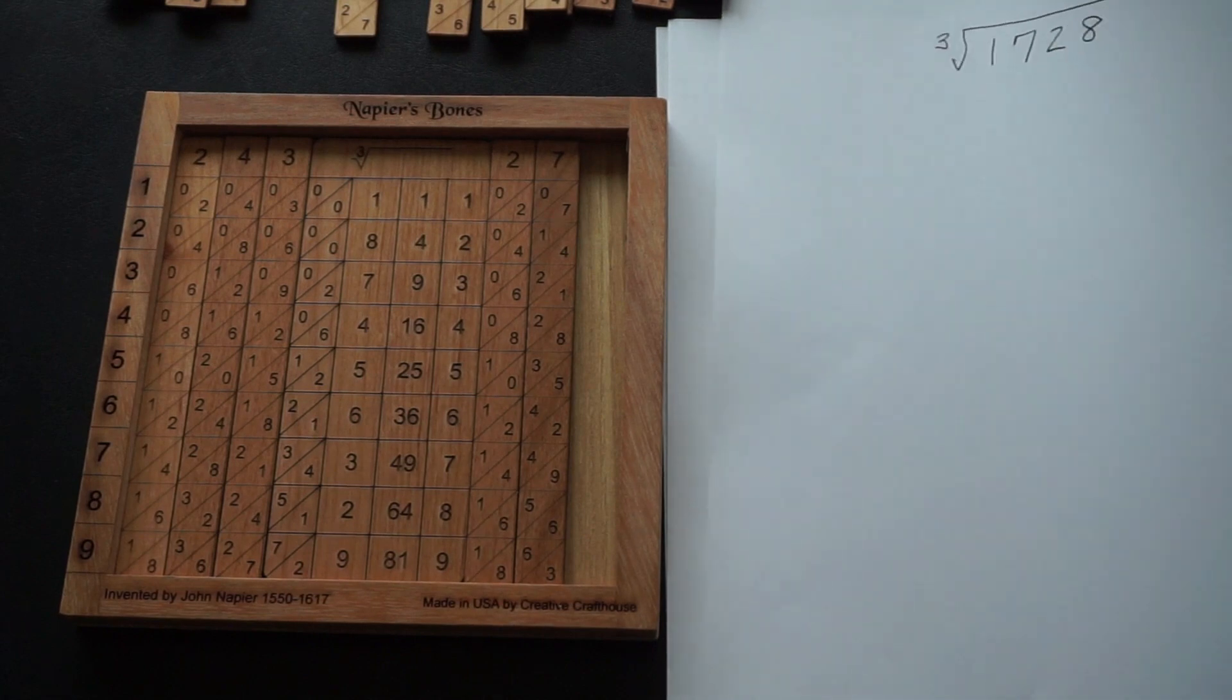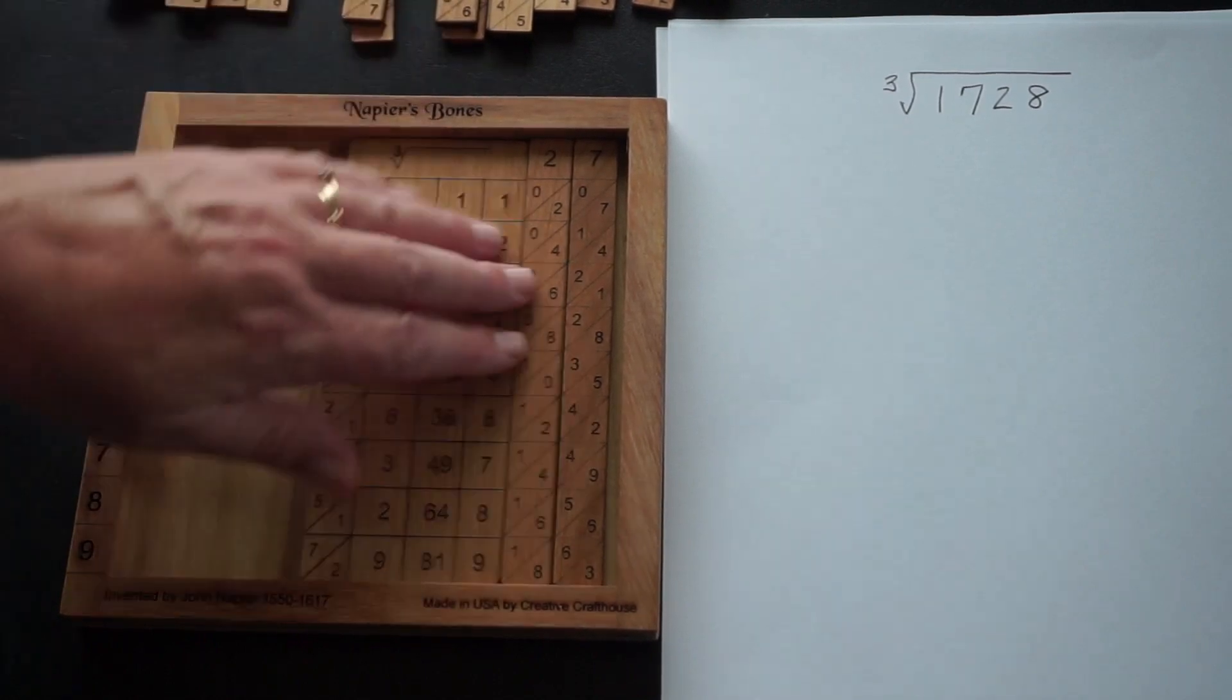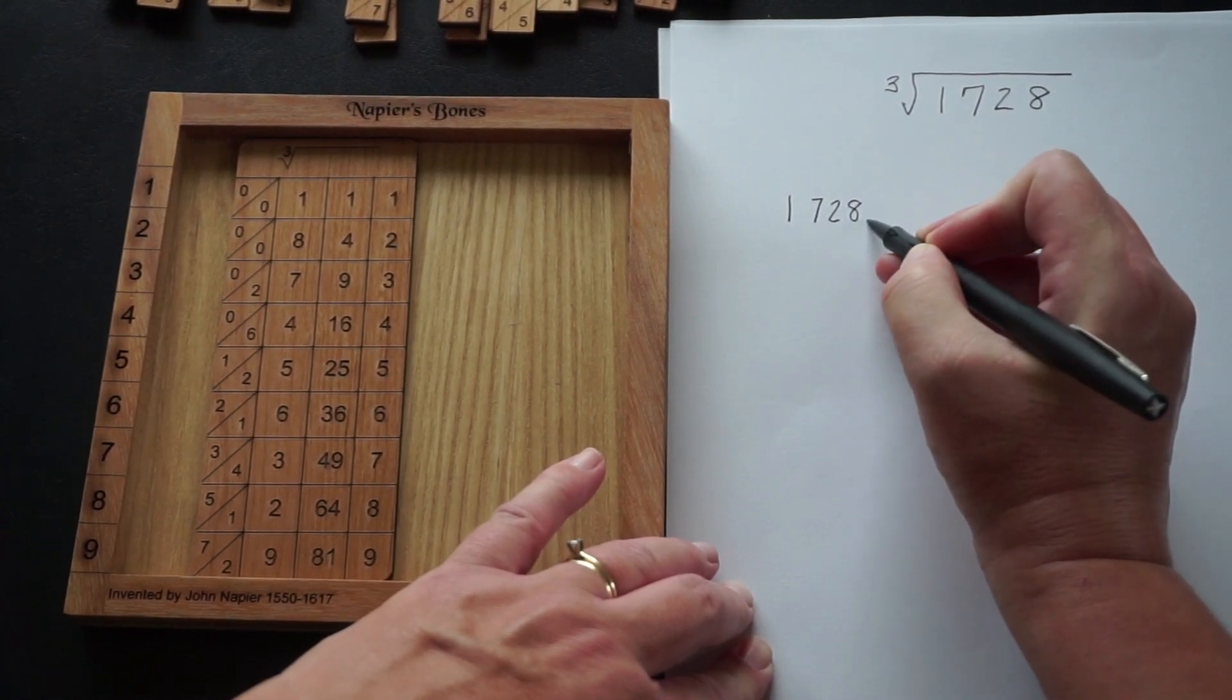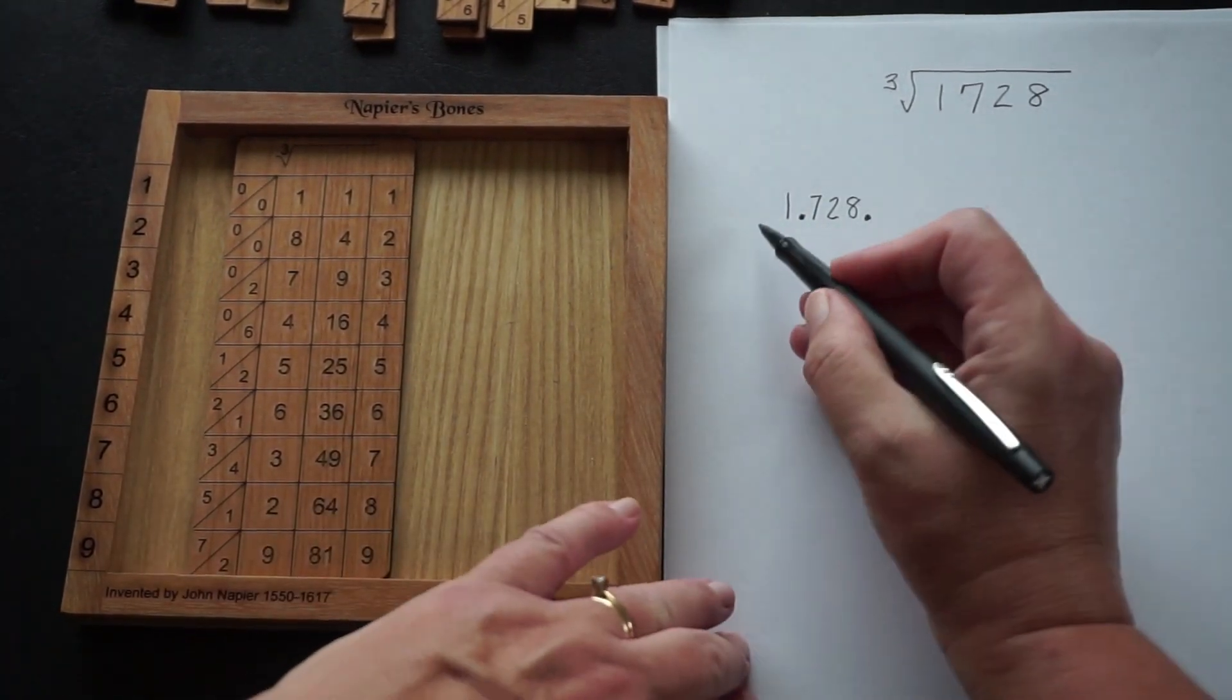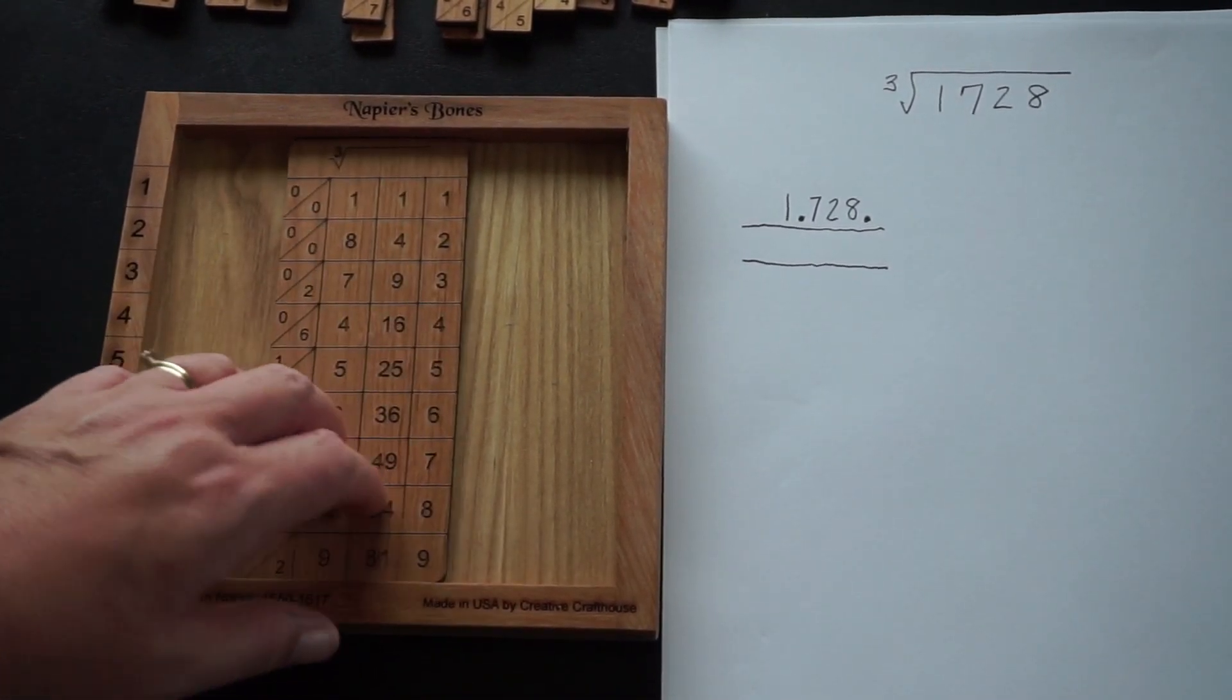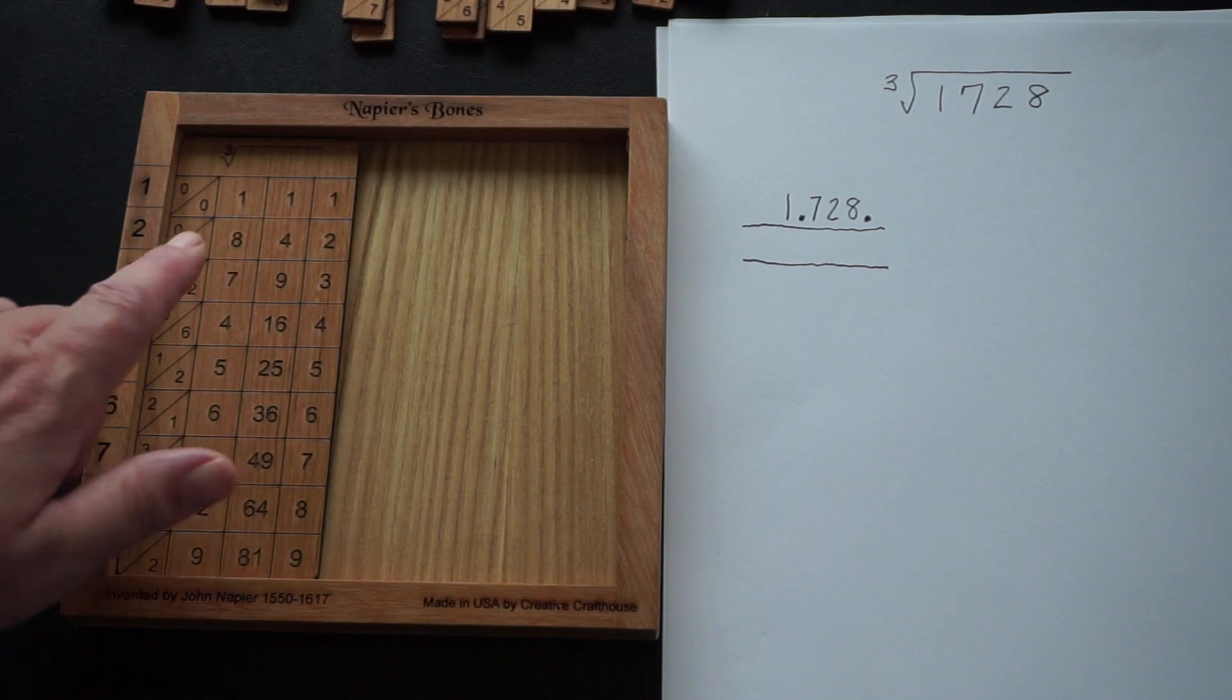Our next example is somewhat smaller. It's 1728, so I'll just reset my board. I have my strips just above my workspace so I can easily grab them. I'm going to rewrite the number that I'm trying to find the cube root of. I'm going to break it into triplets starting at the back. If you have only one number or two numbers at the front instead of three, that's fine. We're going to put a line under that number and another line below that one in order to give us a space to write our answer.